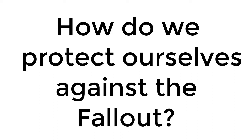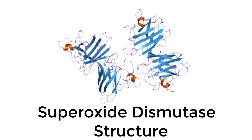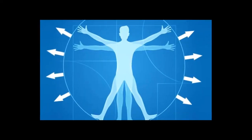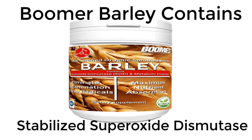So how do we protect ourselves against the fallout? First, we detoxify. The king of all antioxidant enzymes, superoxide dismutase, or SOD, has finally been captured and stabilized. Superoxide dismutase helps to remove a majority of the toxins we absorb from chemtrails. Boomer Barley contains the master antioxidant known as superoxide dismutase, or SOD, in stabilized form.